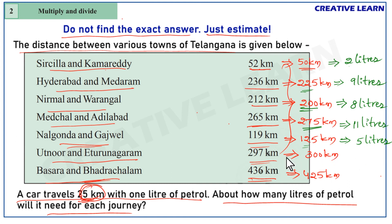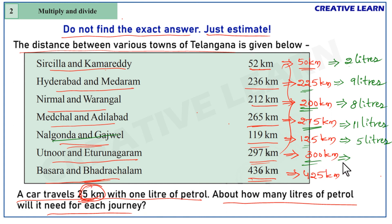That covers Nalgonda and Gajwel. Next, Utnoor to Eturnagaram: the distance is 300 kilometers. For 100 kilometers we need 4 liters, so for 300 kilometers it is 4 times 3, which equals 12 liters.